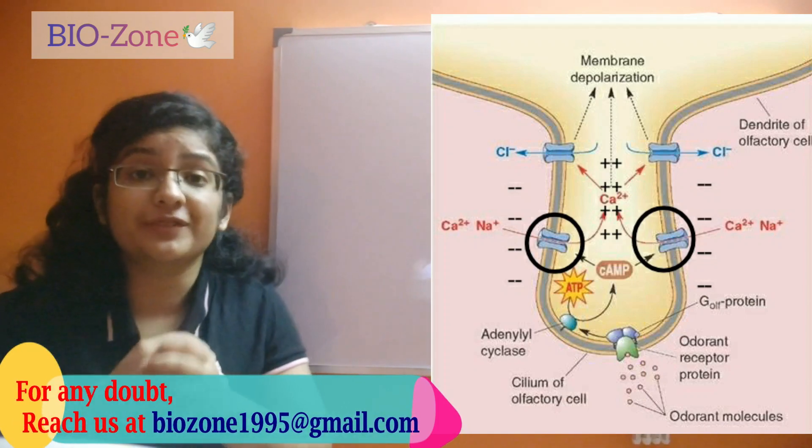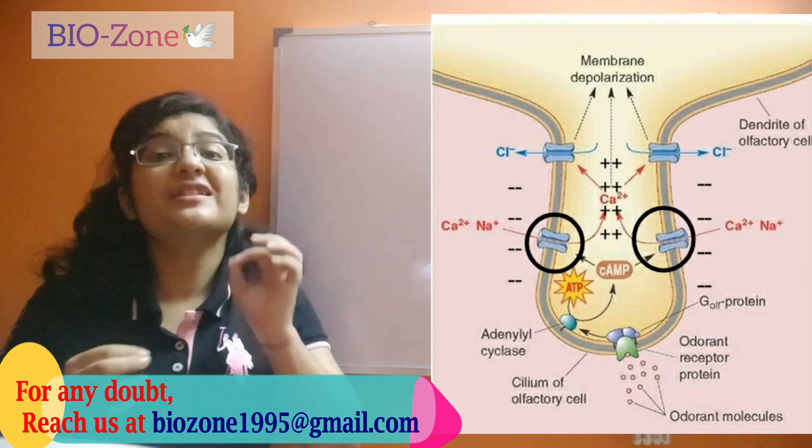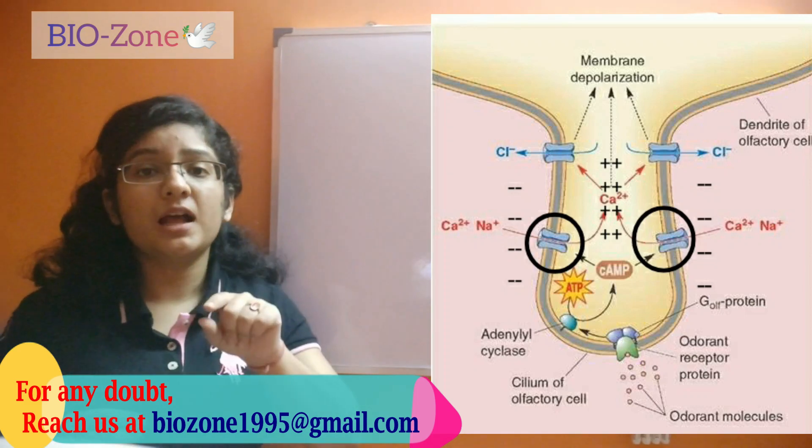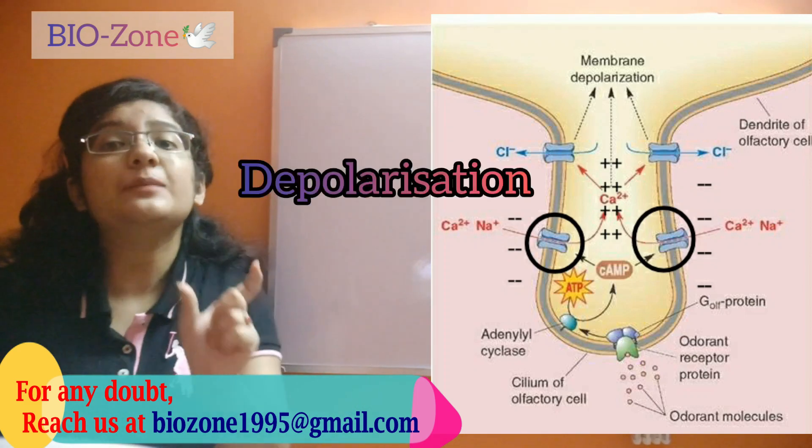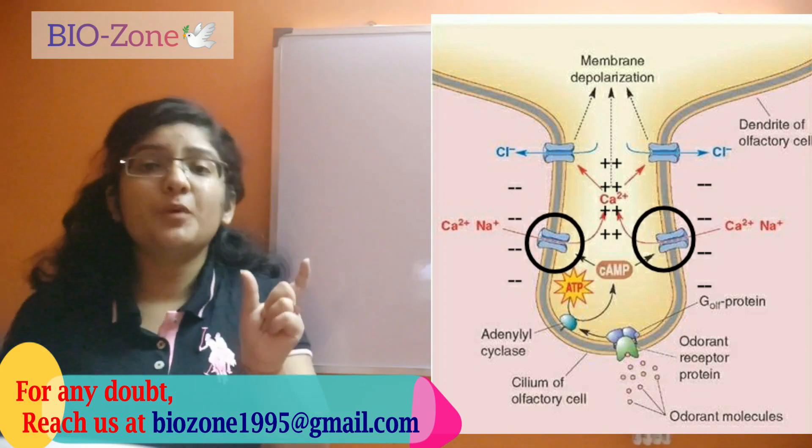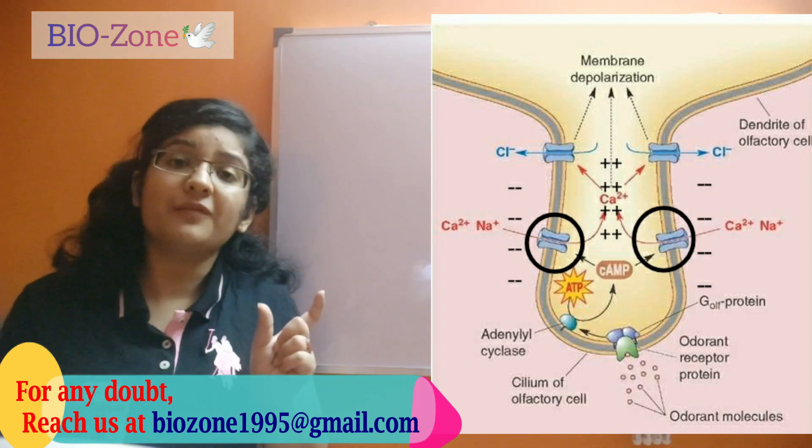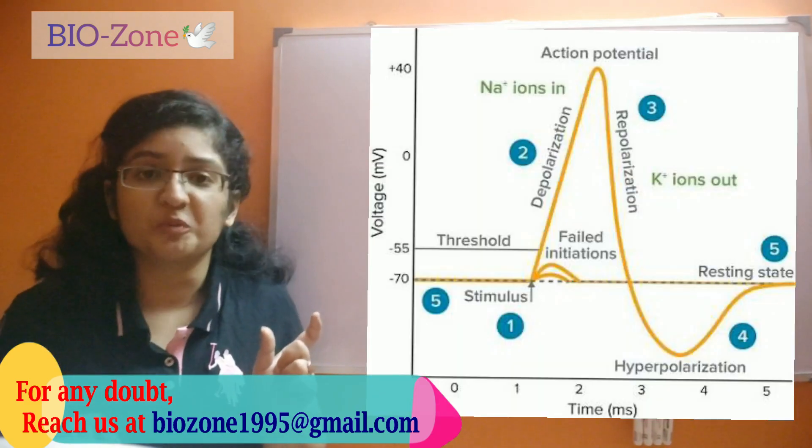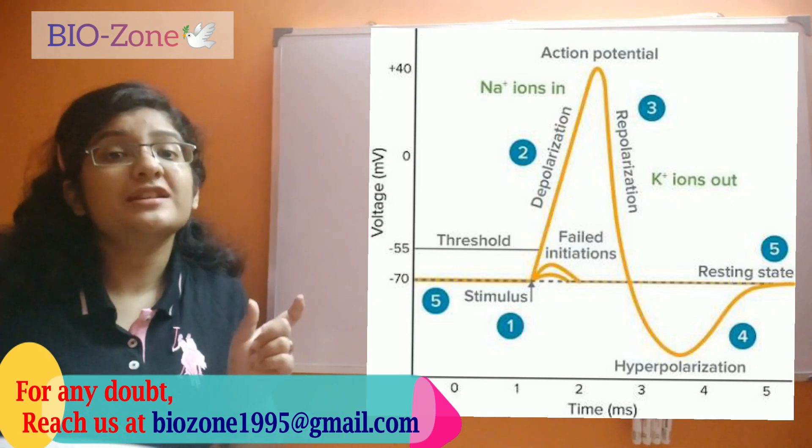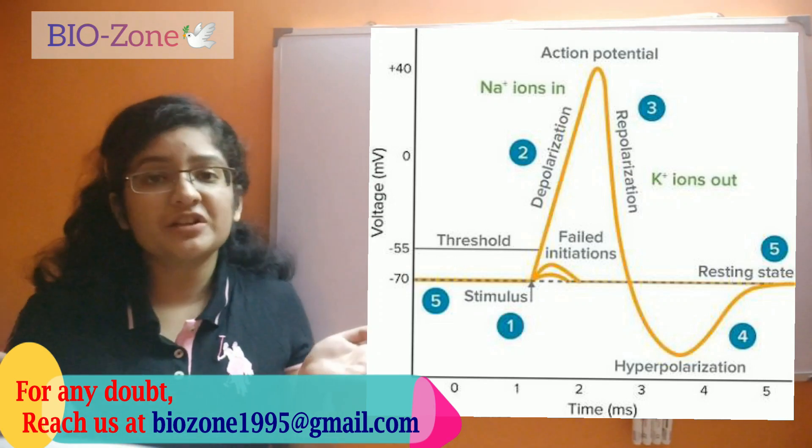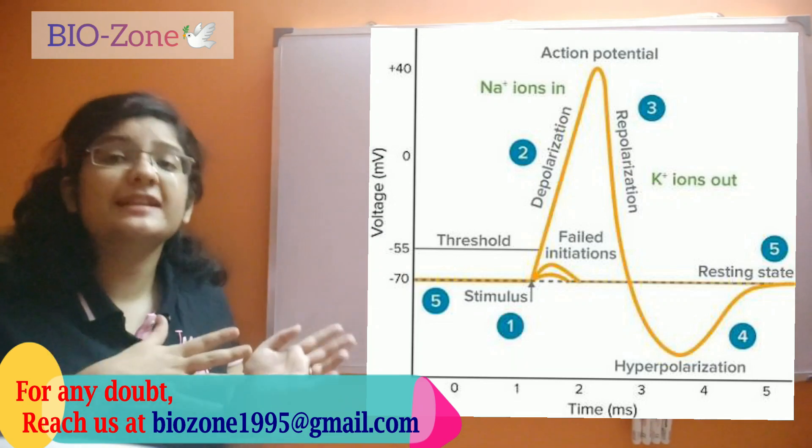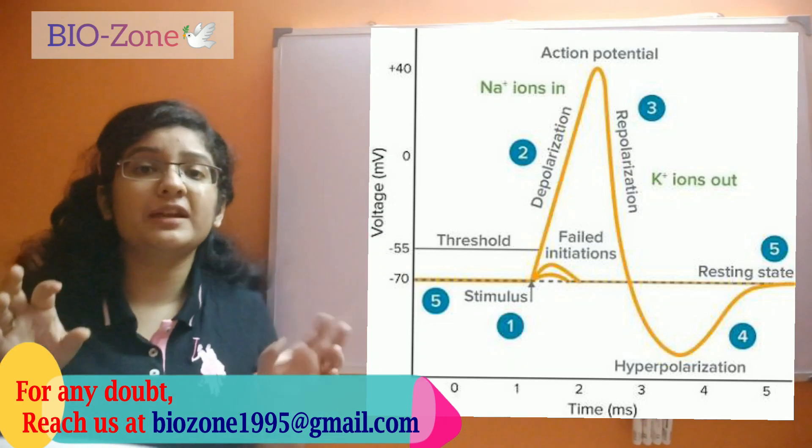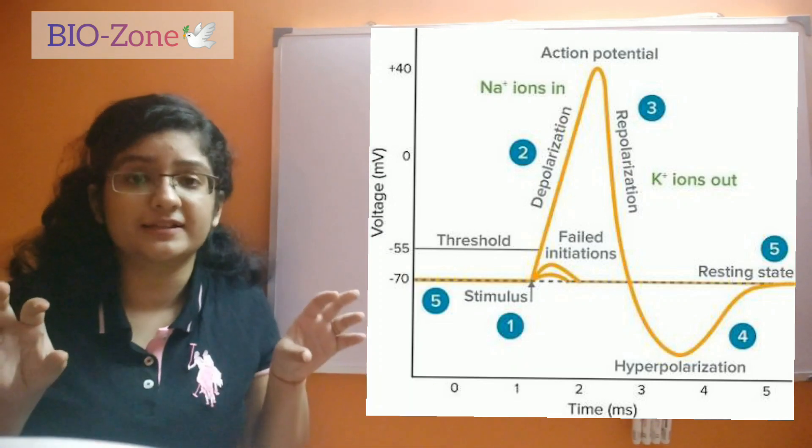These components will increase the positivity inside the cell, which is called depolarization. Now depolarization is the first phase of the generation of the action potential. That causes the generation of action potential within the receptor cell. By this process, chemical stimuli is converted into electrical stimuli.